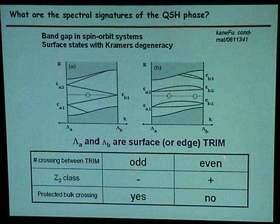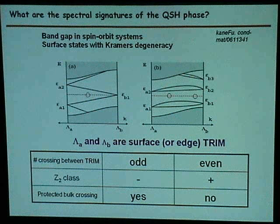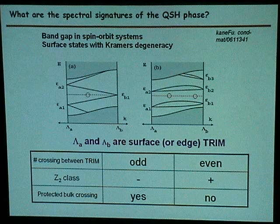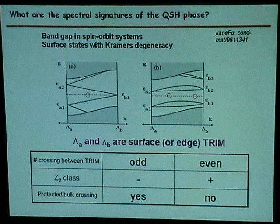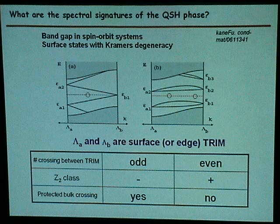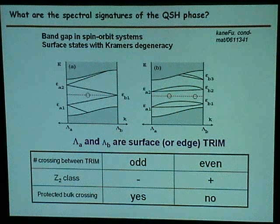TRIM is time reversal invariant momenta. So you take every pair, but it turns out with this type of reciprocal space — in a hexagonal lattice — only gamma and M satisfy TRIM. K does not satisfy TRIM, especially if you have a Dirac point.